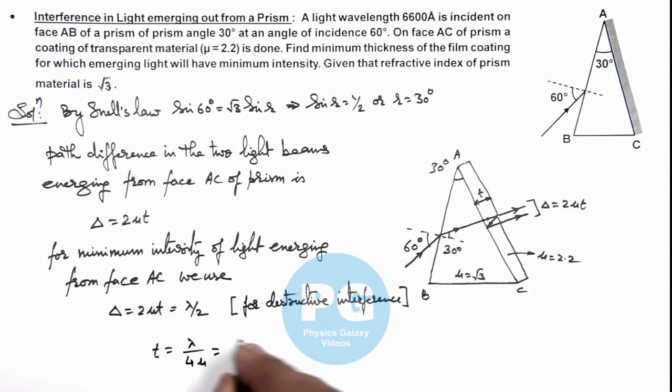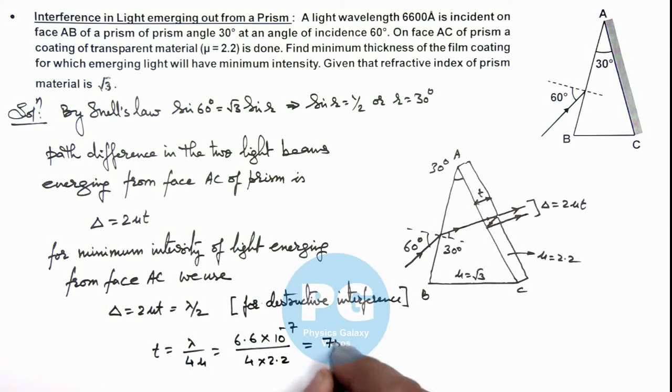If we substitute the value, this is 6.6 times 10 to the power minus 7 divided by 4 times 2.2. On simplifying, this gives us 750 angstrom. That's the result of this problem.